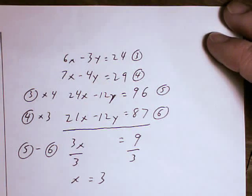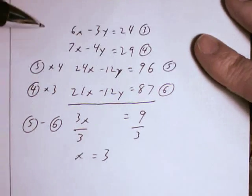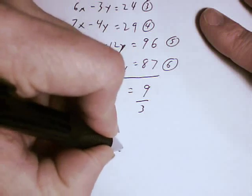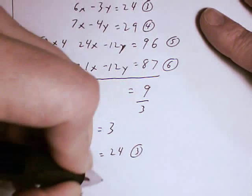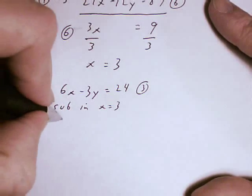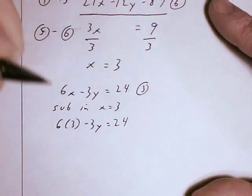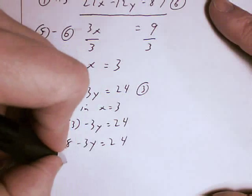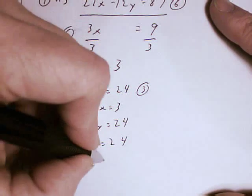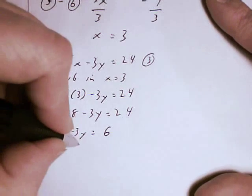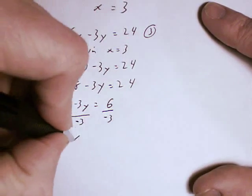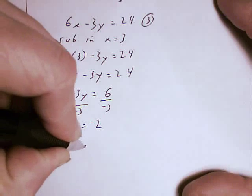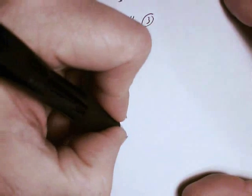I will now substitute x equals 3 into any one of the equations I like. I'll use equation 3 here because it's already in a nice form without any decimals. So I'm going to sub in x equals 3. I'd like to get rid of that 18, so I'll subtract from both sides. And to get rid of the negative 3, I'll divide both sides by negative 3. And that will give me y equals negative 2. So my solution is going to be 3, negative 2.